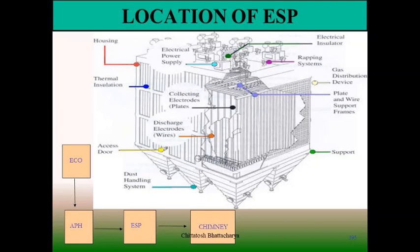When the gas flows through the system, the particles are charged by the emitting electrodes and the charged particles accumulate on the collecting plates. There is a DC power supply and wrapping system available. The wrapping system dislodges the collected ash to the bottom hoppers, from where it is disposed to the conveyor system to the ash handling plant. The outside of the ESP is totally insulated so that temperature can be maintained and there is no accumulation or sticking of ash particles within the collecting plates.